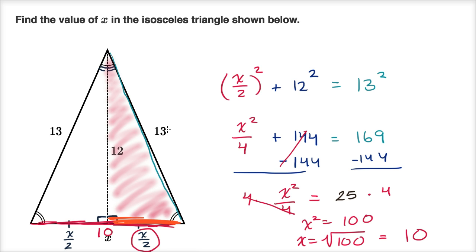So the key realization here is that in an isosceles triangle, the altitude splits it into two congruent right triangles, and so it also splits this base into two. So this is x over two and this is x over two. And we use that information and the Pythagorean theorem to solve for x.